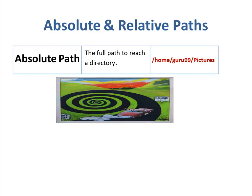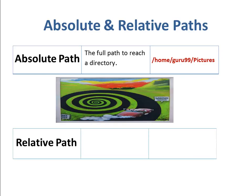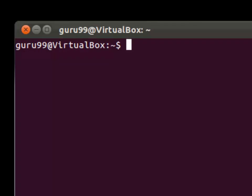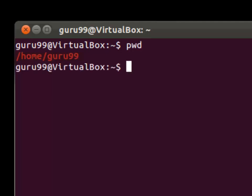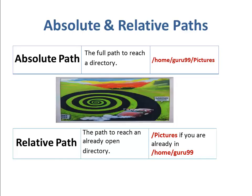Relative path comes in handy when you have to browse another sub directory within a given directory. It saves you from the effort to type complete paths all the time. Suppose you are already in your home directory and you want to navigate to the pictures directory. For this, you do not need to type the absolute path with the command. As you are already in the home/guru99 directory, you can simply type cd followed by the name of the directory and you would reach it. This way, you do not have to specify the complete path to reach a specific location within the same directory in the file system.